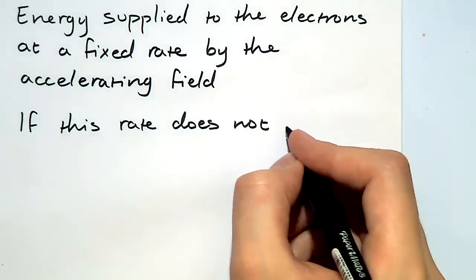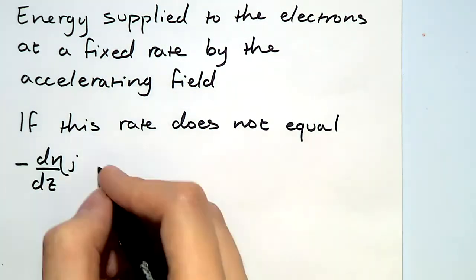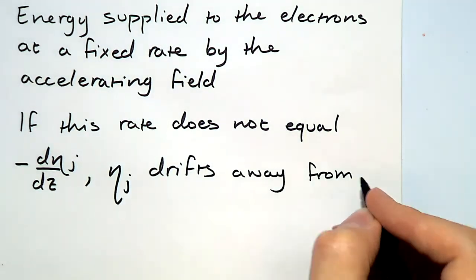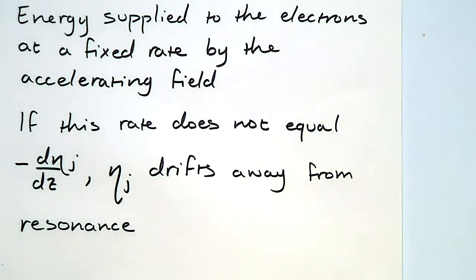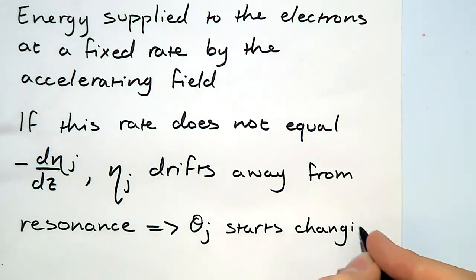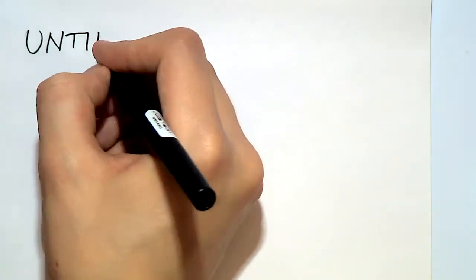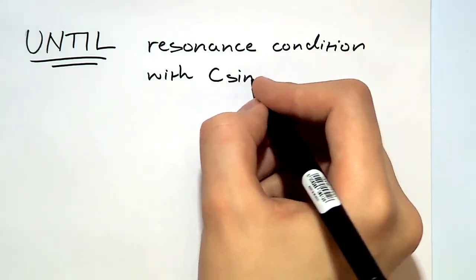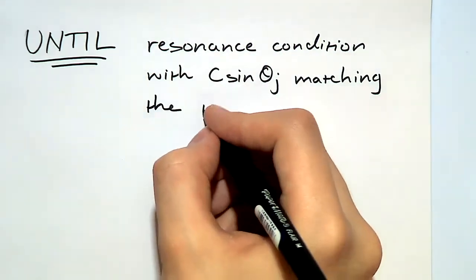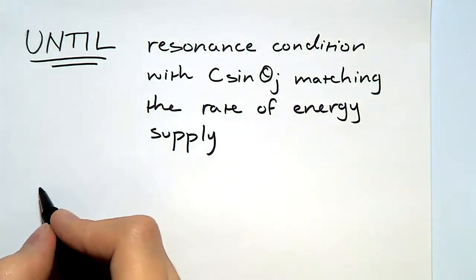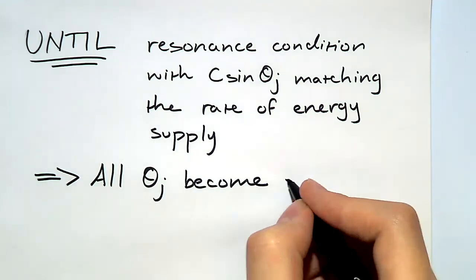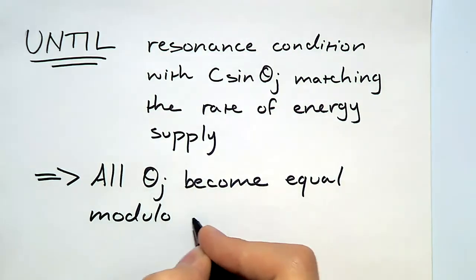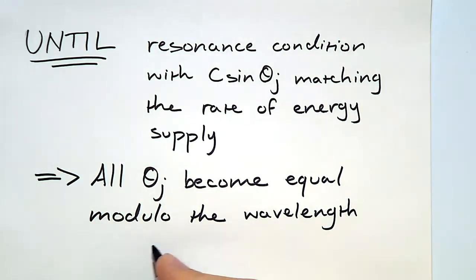To understand what these equations mean, consider that an electron is initially at resonance, so the ponderomotive phase is constant, but if the ponderomotive phase does not give the rate of change of energy matching that of the rate of supply of energy due to the accelerating field, the relative energy starts drifting, which means that the ponderomotive force will start drifting until the ponderomotive phase is at resonance and it matches the energy supply to the electron. This means that all the ponderomotive phases of each of the electrons become equal, modulo the wavelength, given by 2π over the sum of the wave vector lengths of the wiggler and the radiation field.